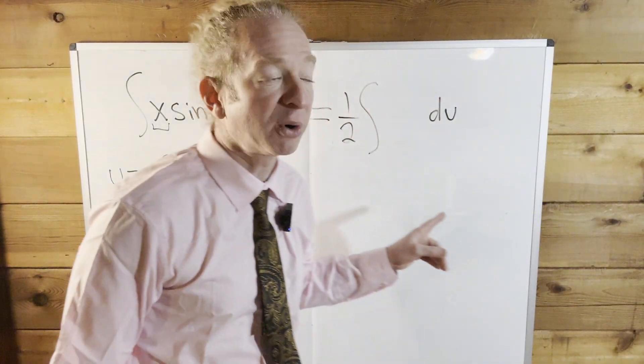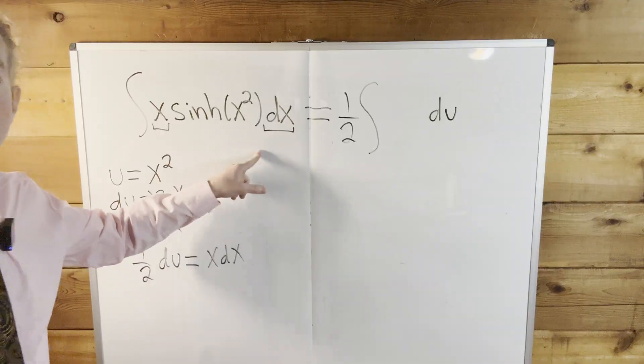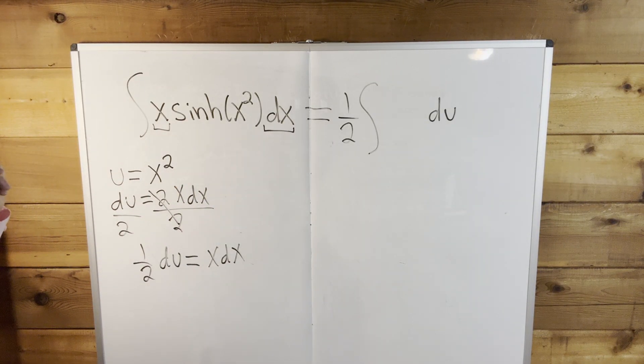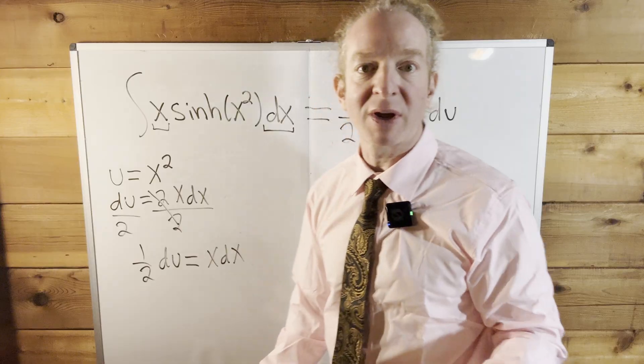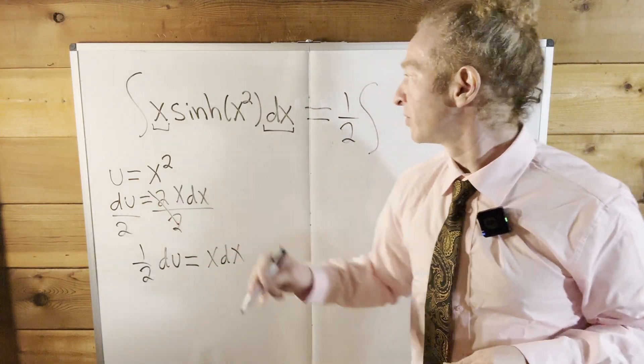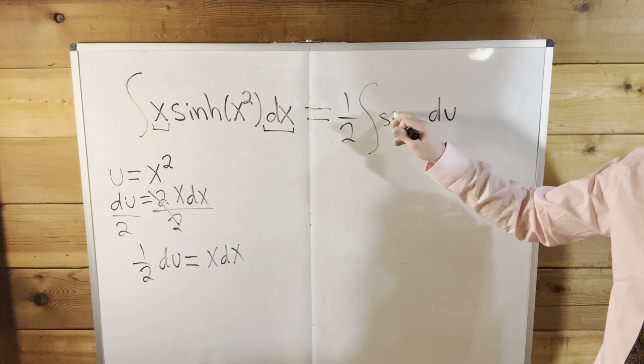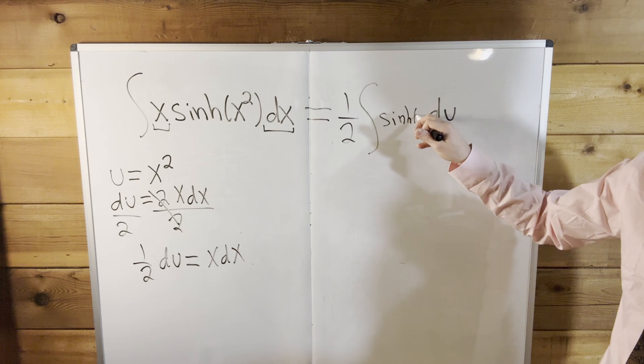So the only thing we've replaced at this point is the x and the dx. So what's left? sinh of x squared. But we know what x squared is, right? We said that it was u. So this is sinh of u.